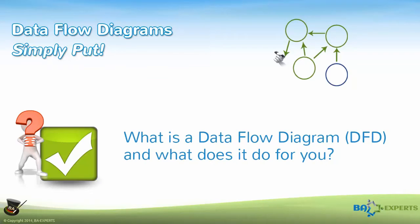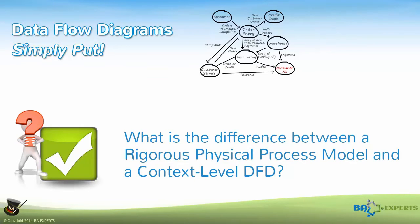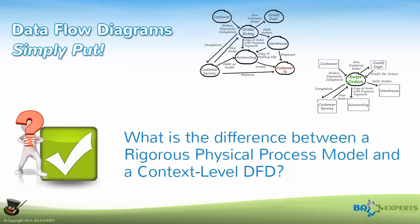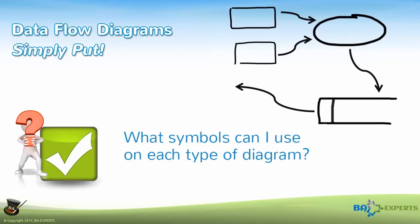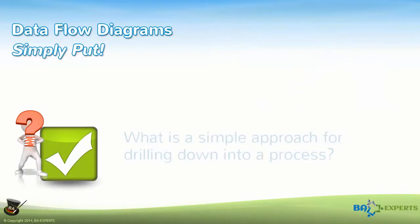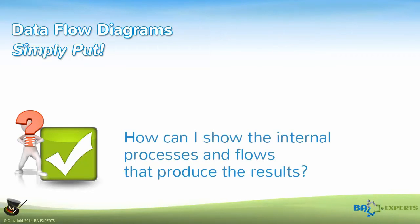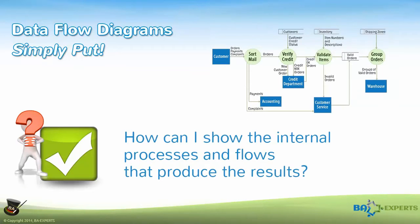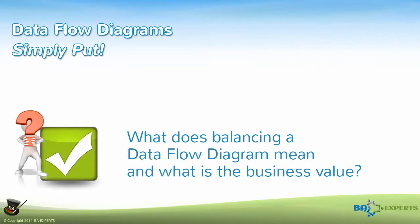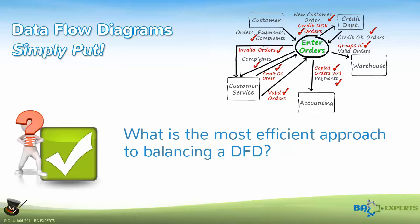What is the Dataflow Diagram, and what does it do for you? What's the difference between a rigorous physical process model and a context-level DFD? What symbols can I use on each type of diagram? What is the business value of exploding or leveling a DFD? What's a simple approach for drilling down into a process? How can I show the internal processes and flows that produce the results? What does balancing a Dataflow Diagram mean, and what is the business value?